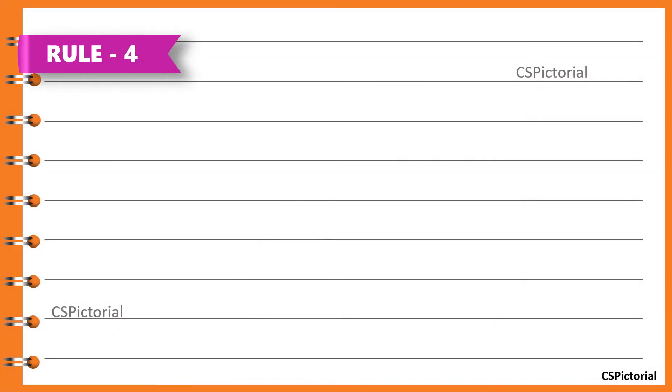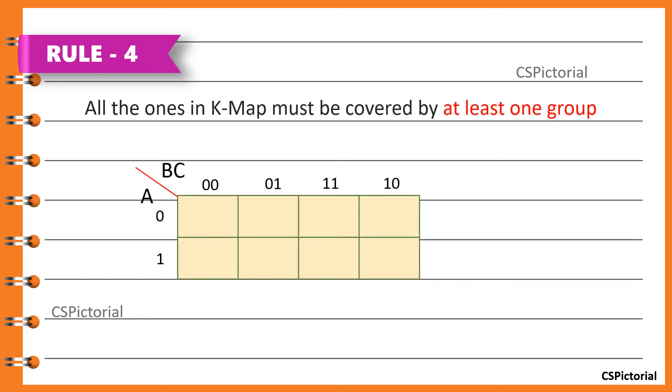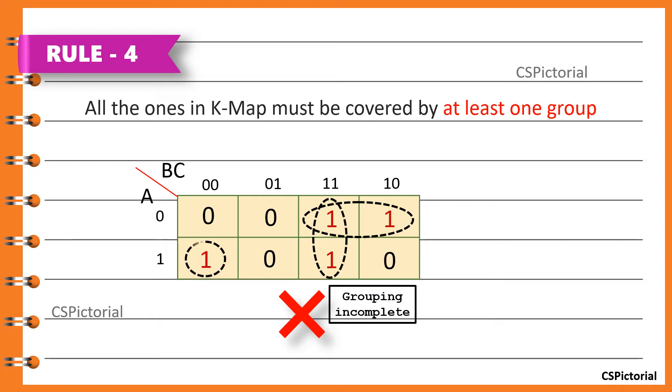All the ones in K-map must be covered by at least one group. Only then, the grouping would be considered complete. In this example, we first make a horizontal pair, then a vertical pair. Yet, the grouping is incomplete. Now, we make a group of the single cell containing a one. No ones are left without grouping, so the grouping is said to be complete.